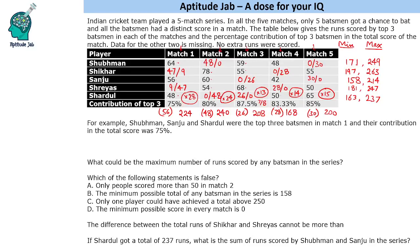Now the questions: What is the maximum possible runs scored by any batsman in the series? The answer is 263. Regarding the statement 'only two people scored more than 15 in match two' — looking at the scores, it should actually be three people, so that statement is false. The minimum possible total for any batsman is 158 — that is true. Only one player could have achieved a total above 250, which is also true. The minimum possible score in every match is zero — that is false.